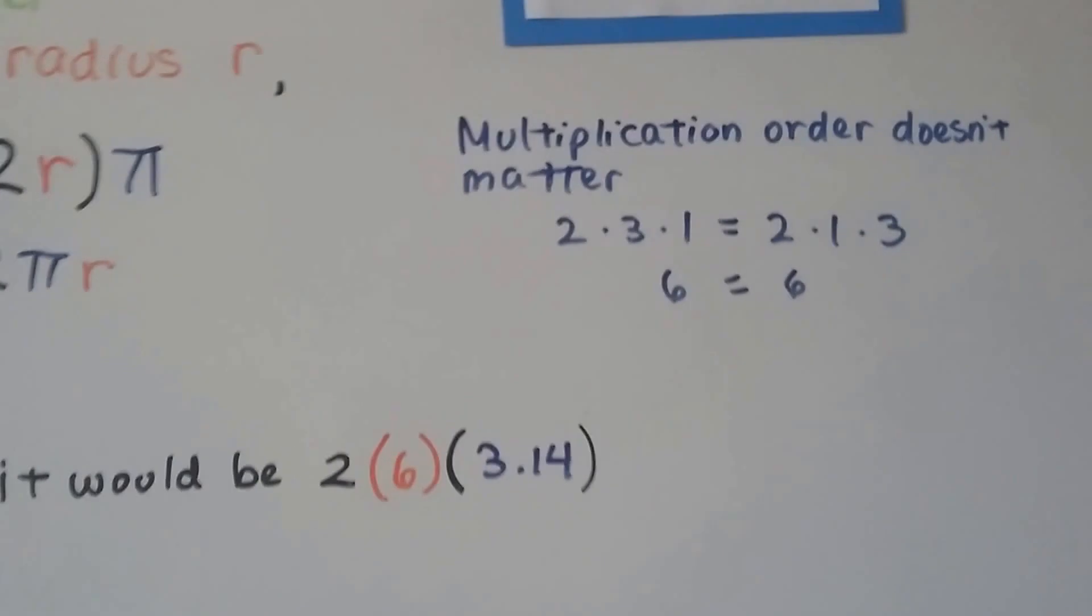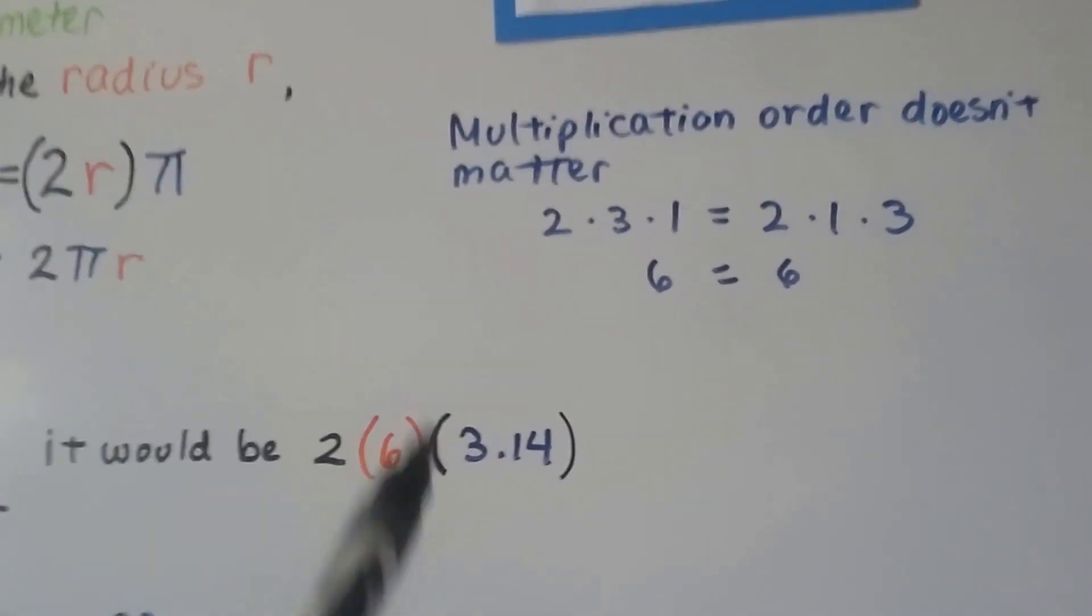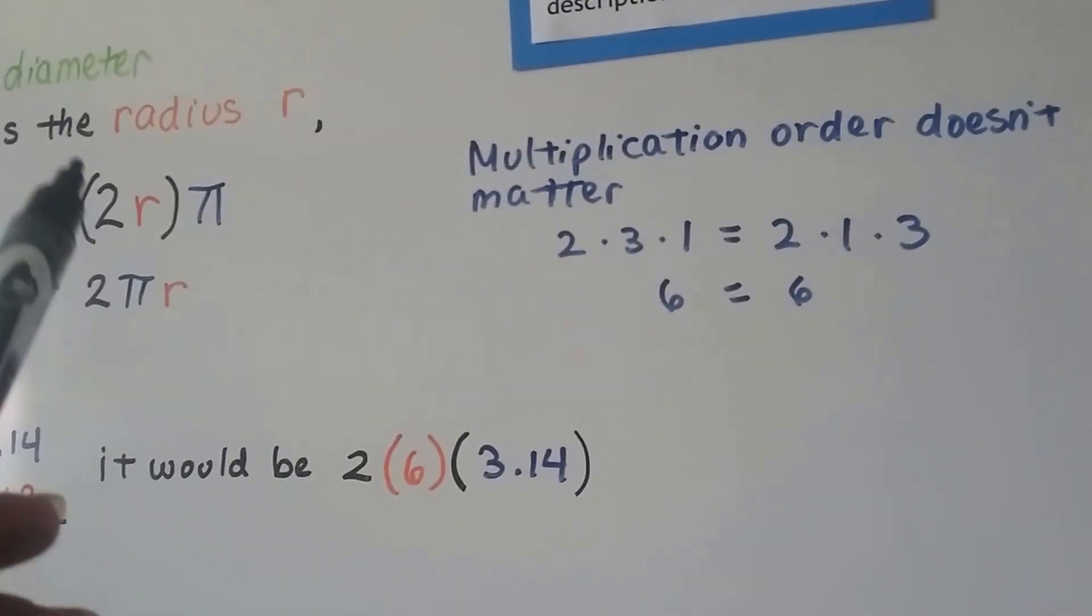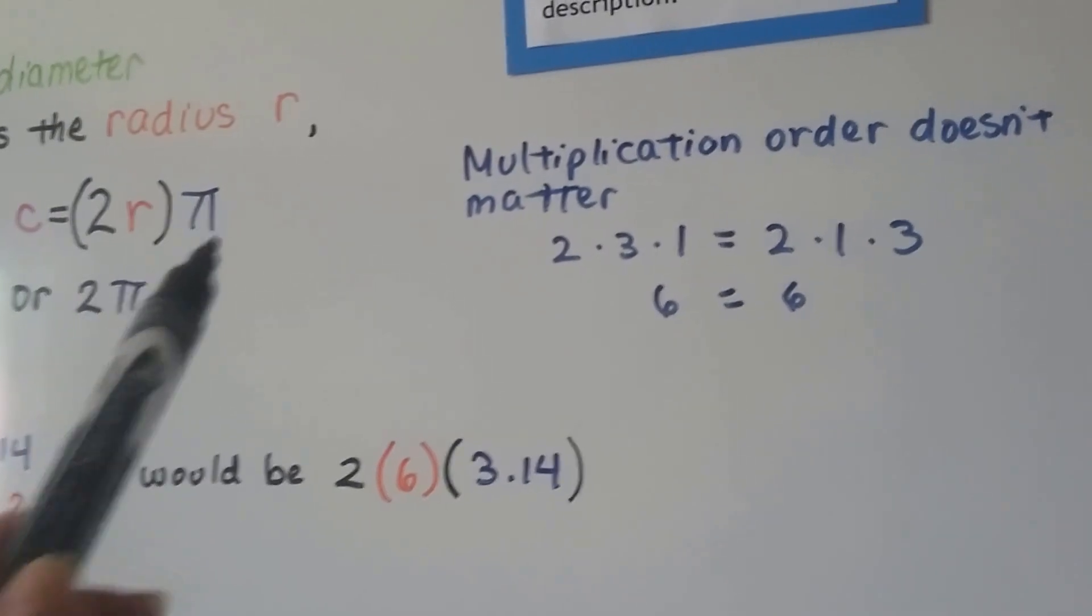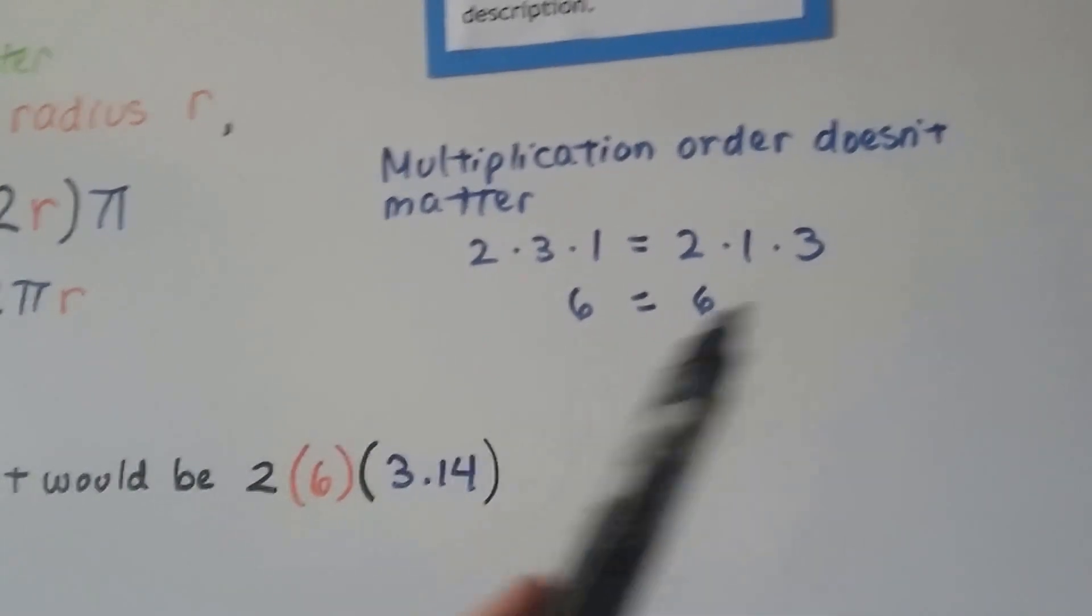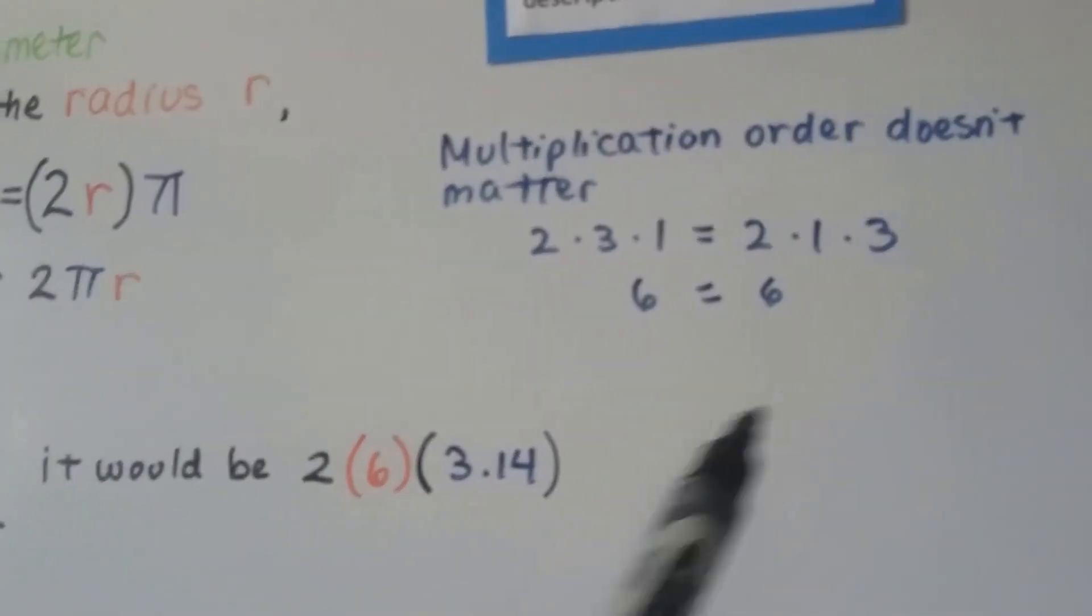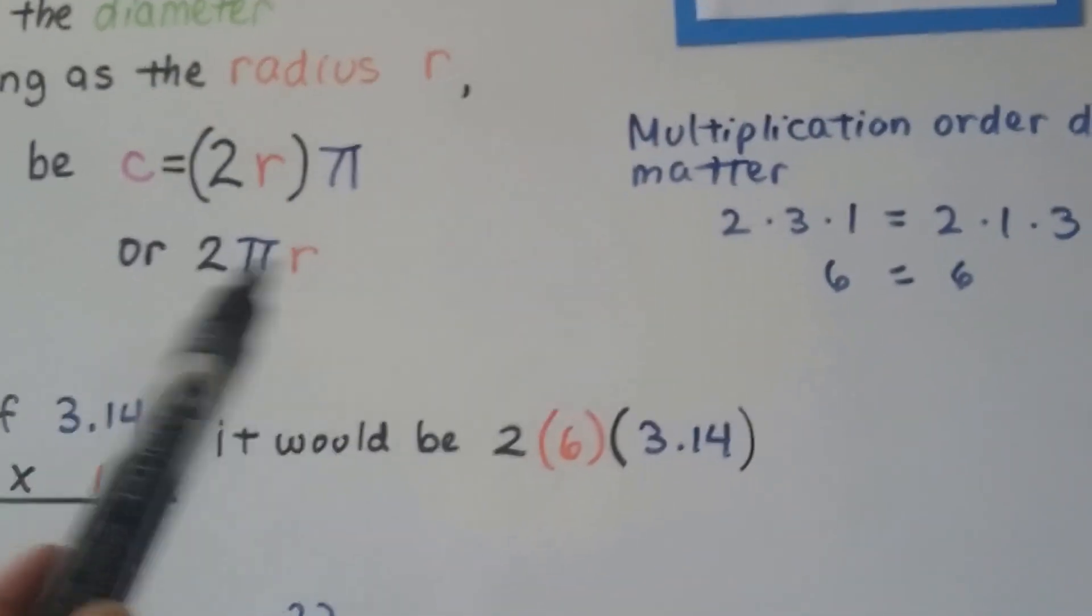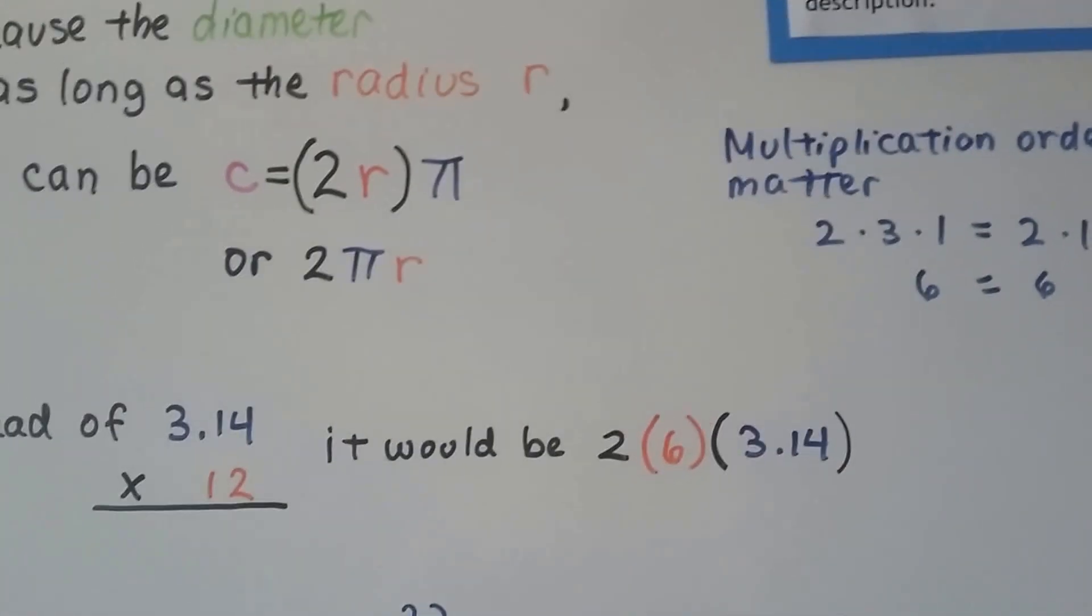Remember in multiplication the order doesn't matter? If we're doing all multiplication, two times radius times pi, it's all multiplication. Two times three times one is the same thing as two times one times three. We're gonna get six. So it doesn't matter the order if it's all multiplication. So we can say 2 pi r.